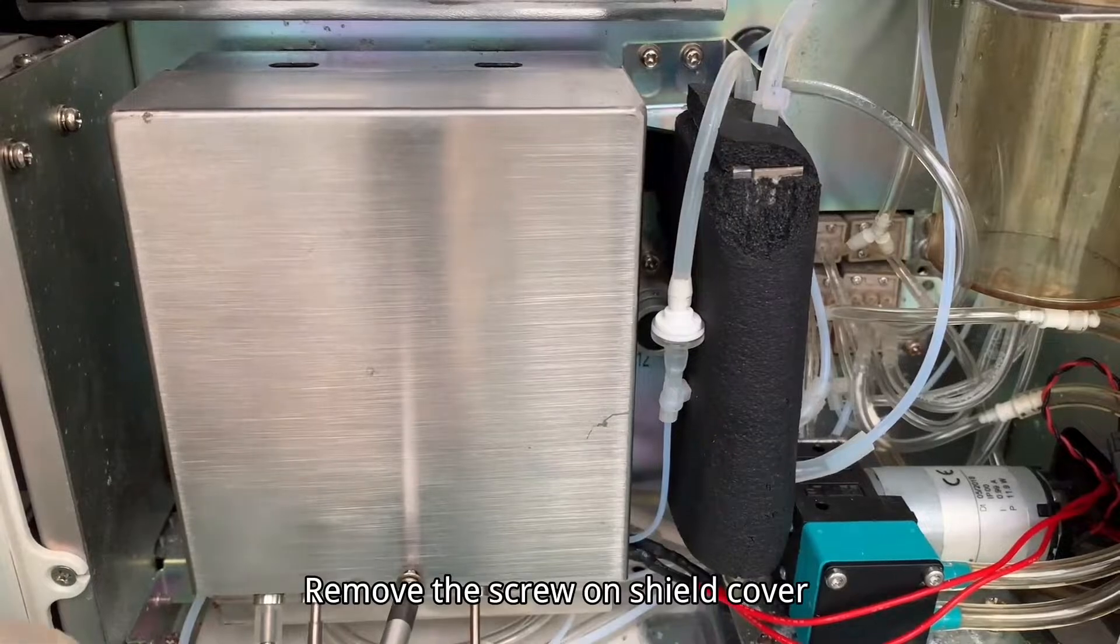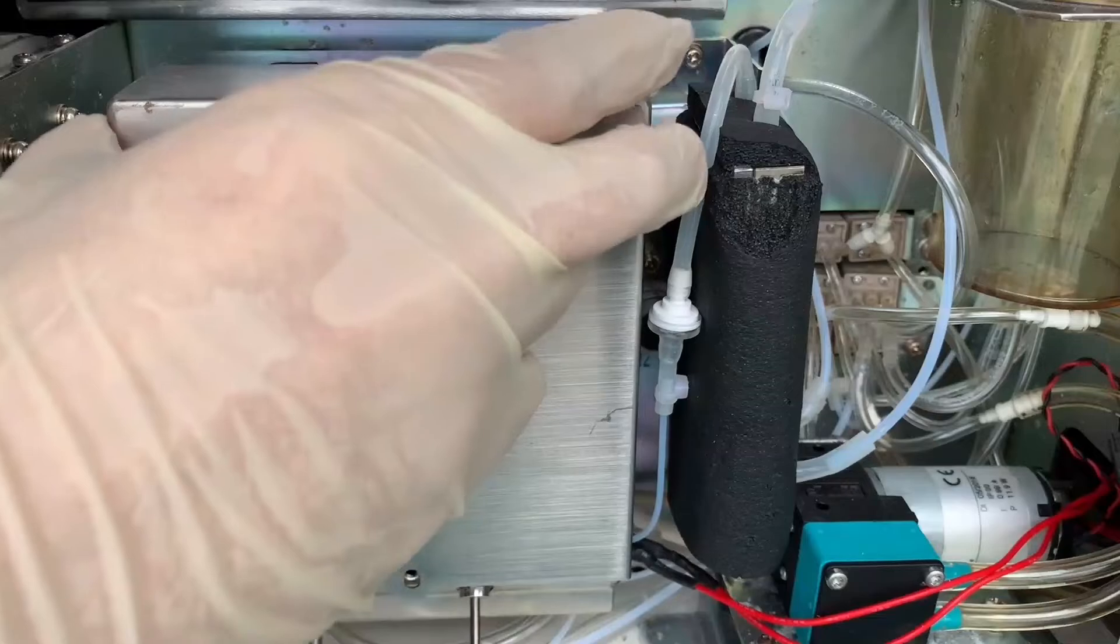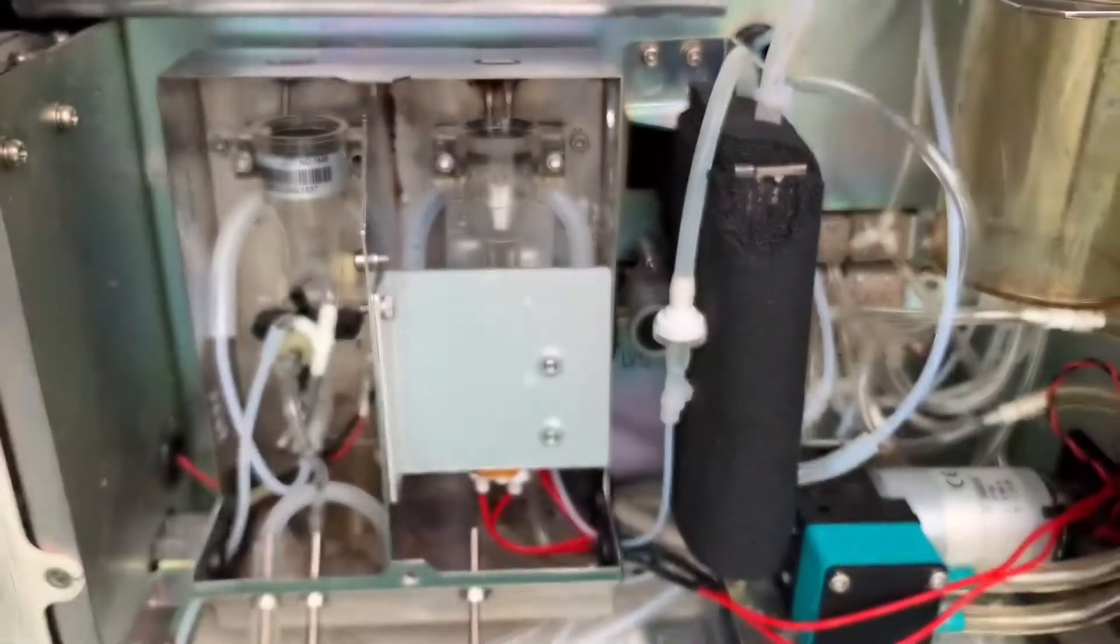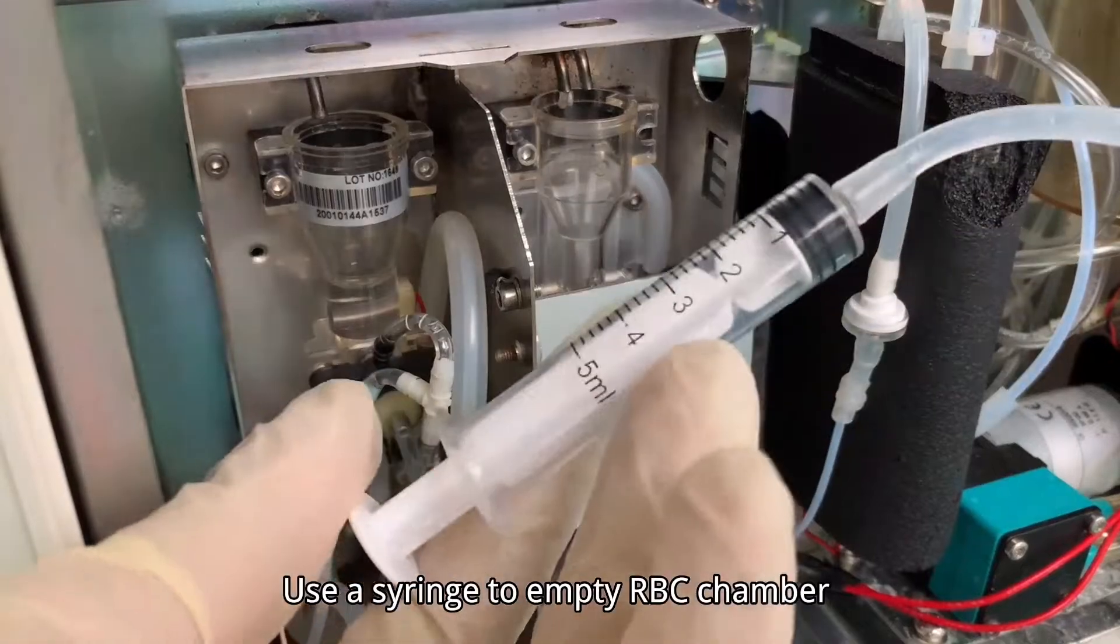Remove the screw-on shield cover. Use a syringe to empty the RBC chamber.